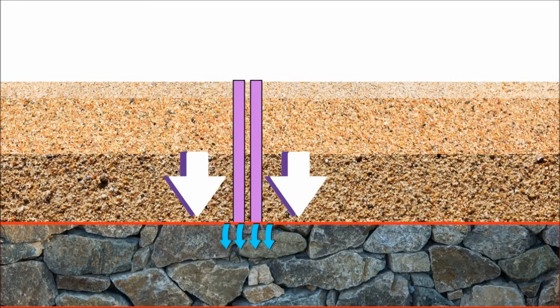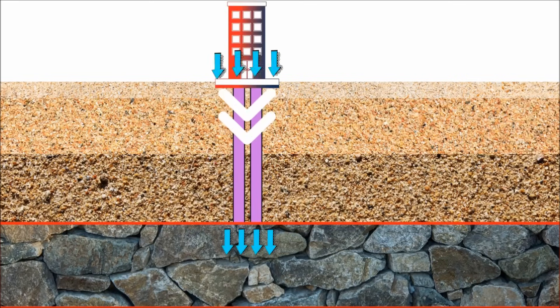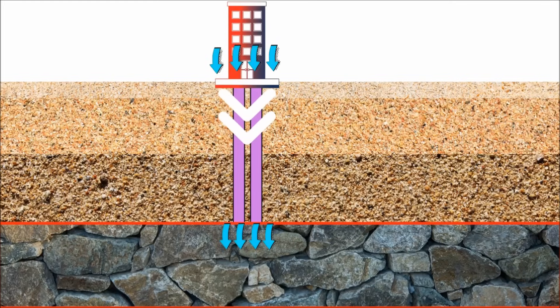As a result, the pile acts as a column and safely transfers the superstructure loads to the strong layer.